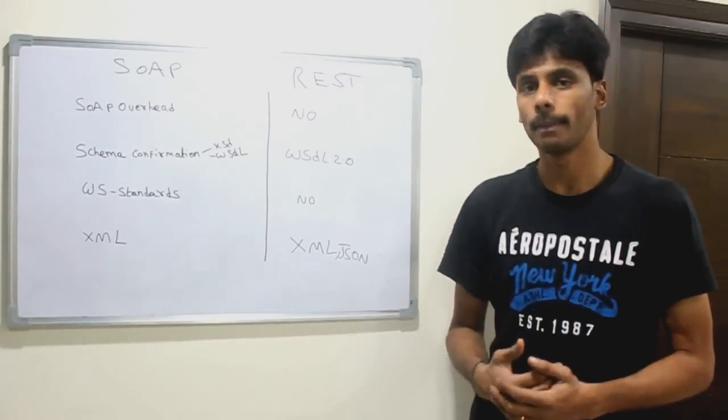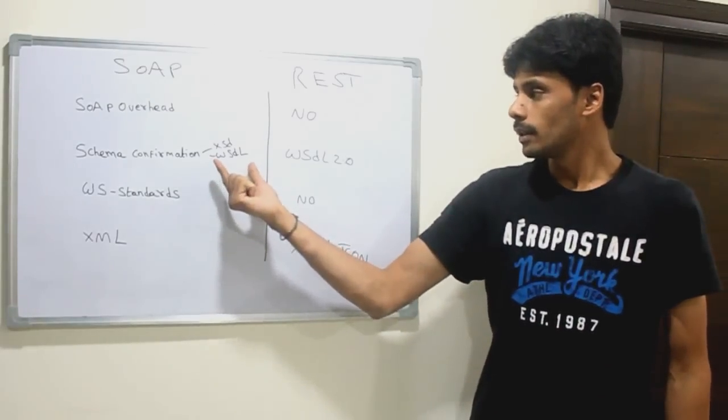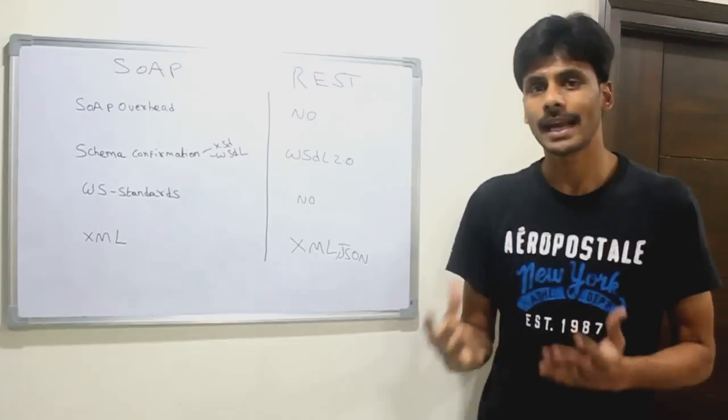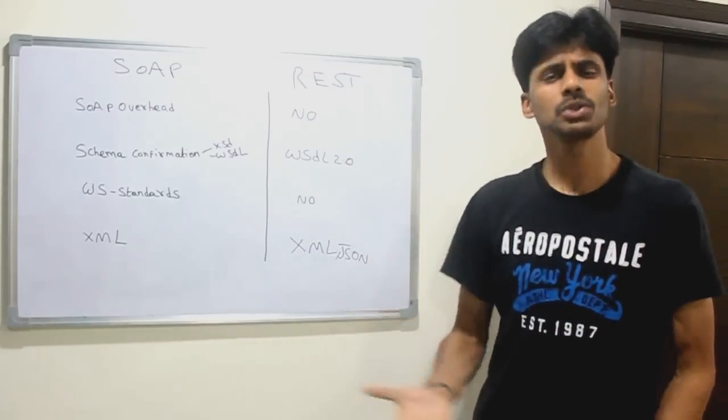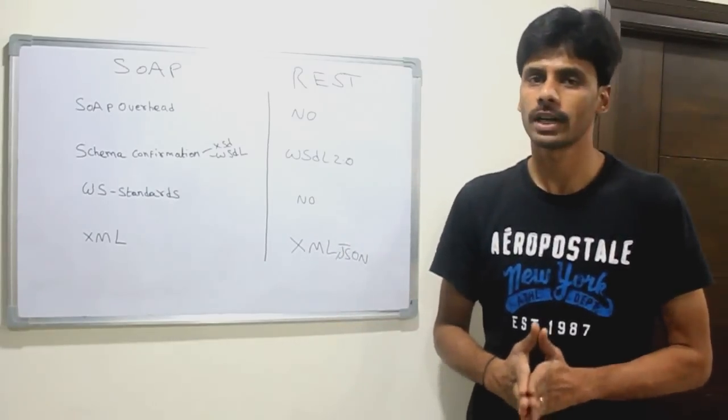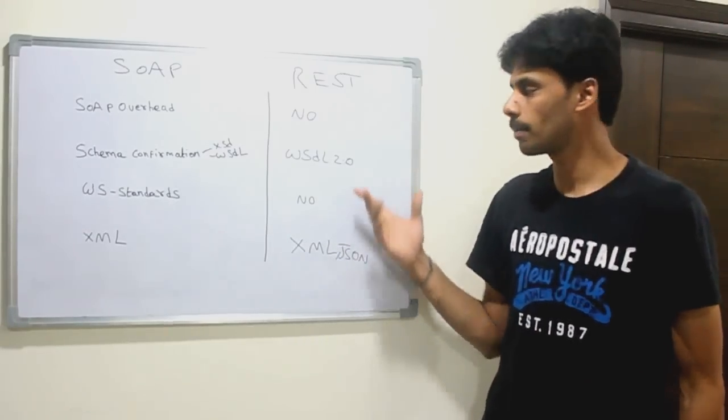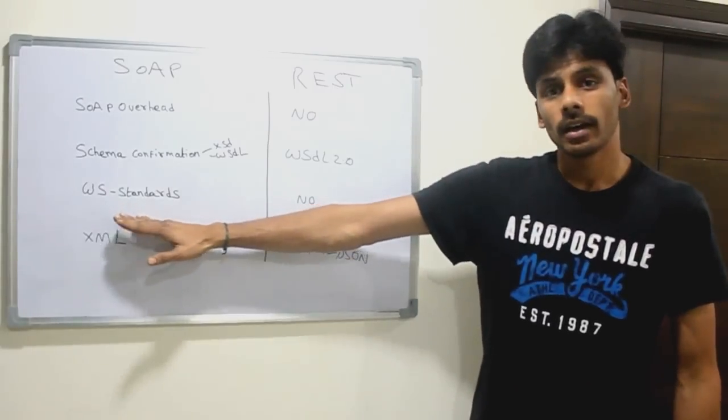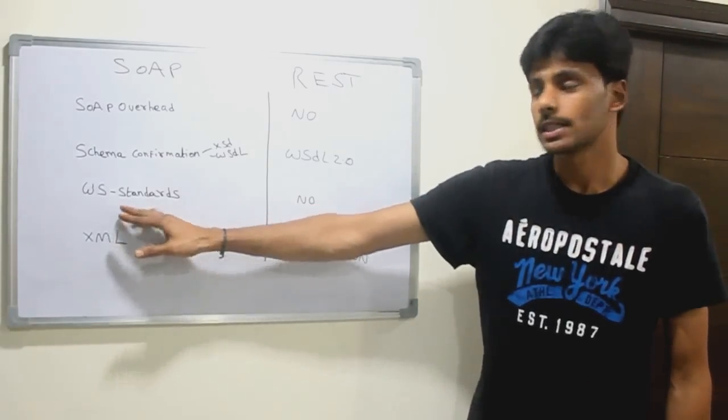Using SOAP-based services, it's easy to define the contract between two parties, which is very important especially in web services because they are loosely coupled. Using WSDL, it's easy in case of SOAP-based web services to define a standard contract, whereas in RESTful it used to be difficult, but starting WSDL 2.0, they have provided support even for RESTful services. It hasn't picked up that much, but it's getting popular.